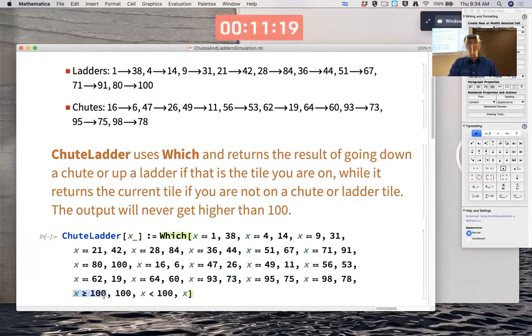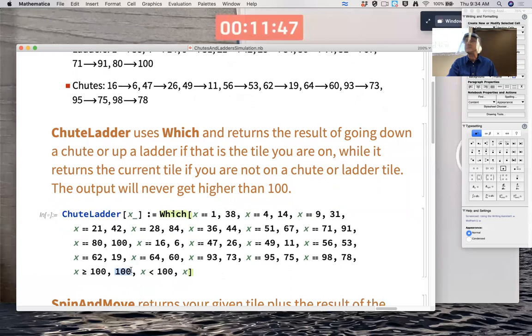If x is greater than or equal to 100, we effectively stop, we keep the output at 100. Actually, the output wouldn't get bigger than 100. So I didn't really need to put greater than or equal to there. And if x is less than 100, but not one of these other ones, evidently, because you sort of go through this Which command in order, then I keep the output at x. And effectively, this is just trying to keep track of the chutes and the ladders. But the 100 there means also that when you get to 100, you stop. The output is 100.